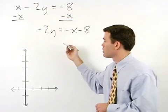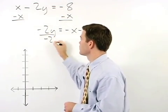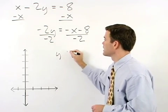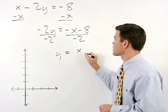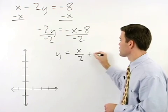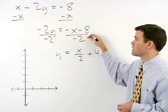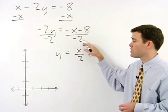Next, we divide both sides by negative 2 to get y equals x over 2 plus 4. Remember to divide both terms on the right side of the equation by negative 2.